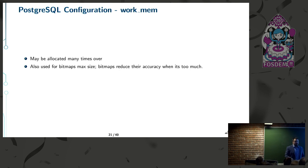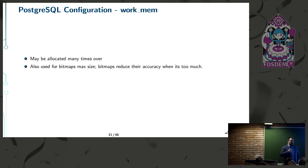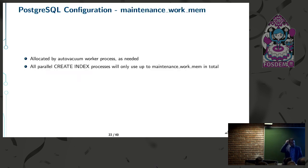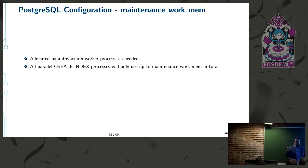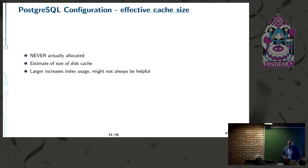work_mem can be allocated many times over — it's used for bitmaps, hash builds, and sorting in memory. If you're using a bitmap heap scan and overflow work_mem, bitmaps will start to reduce their accuracy, which is a potential performance issue. maintenance_work_mem is allocated by autovacuum worker processes and parallel CREATE INDEX or ALTER TABLE. For example, with five autovacuum workers and a gigabyte set, you can use up to a gigabyte for each one.